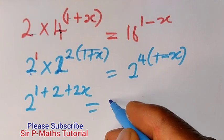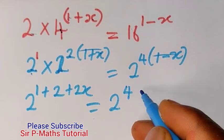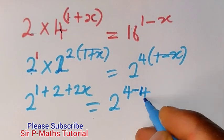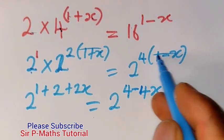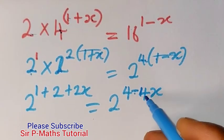2 raised to power 4, 4 minus 4x. That is 4 times 1, 4. 4 times x, 4x.